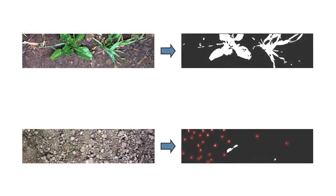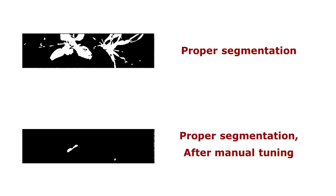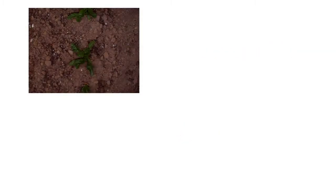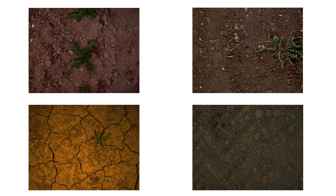Most approaches to this task require a pre-segmentation of the images into soil and vegetation areas, in order to generalize well to new conditions. This requires a re-adaptation effort for hyperparameter tuning in each field, given the variance of conditions such as different soil types, growth stages, and lighting. This adaptation effort is especially critical when dealing with RGB images, when no infrared information is available to help the task, and it is undesired when automating the whole weeding process.